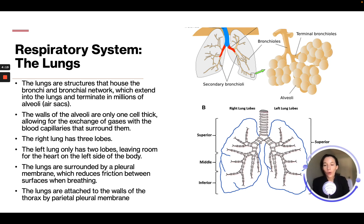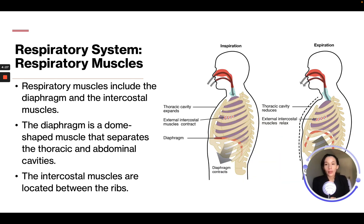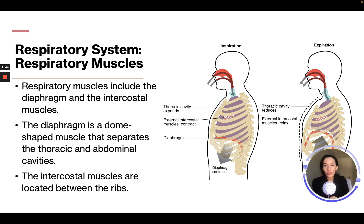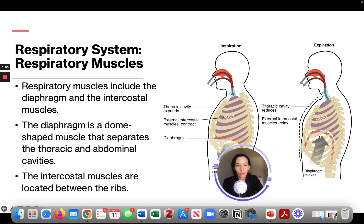The lungs are surrounded by a pleural membrane that reduces friction between surfaces when breathing, and the lungs are attached to the wall of the thorax by the parietal pleural membrane. The respiratory muscles include the diaphragm and intercostal muscles. The diaphragm is a dome-shaped muscle that separates the thoracic and abdominal cavities. The intercostal muscles are located between the ribs.